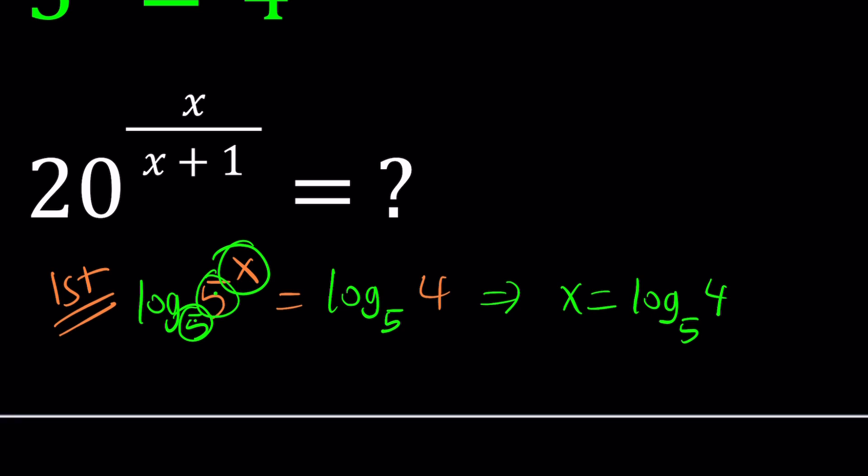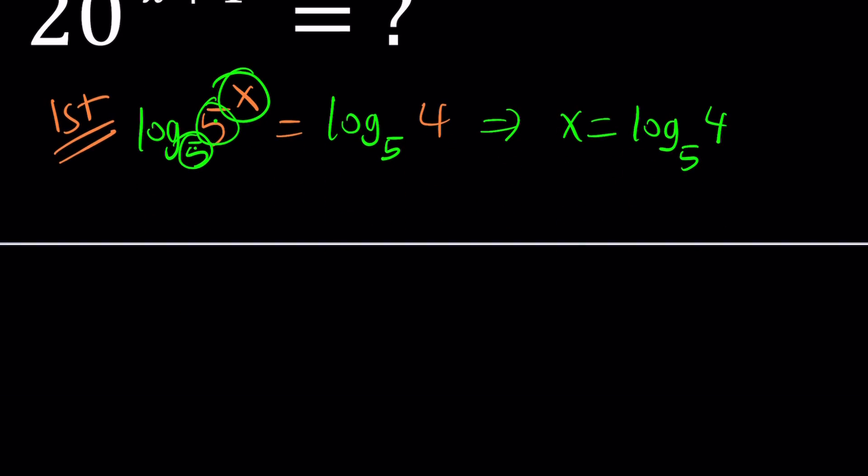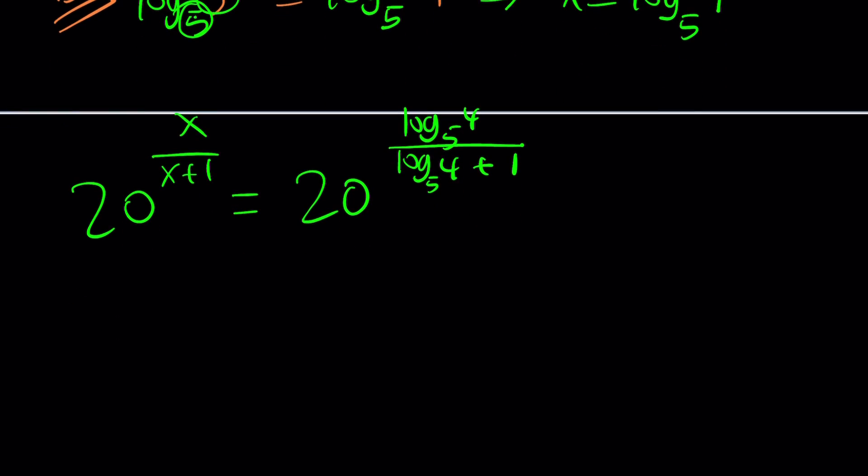The problem though, we kind of need to... Let me see. I think we can pull it off by using some properties of logarithms. So let's go ahead and evaluate 20 to the power x over x plus 1. So that's the goal. So we're going to replace x with log 4 divided by log 4 plus 1. Now here's one thing you can do to combine these two things, which is called condensing.